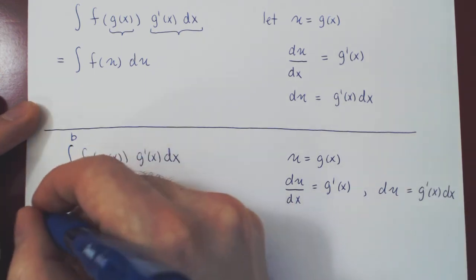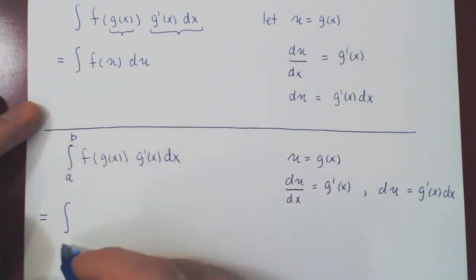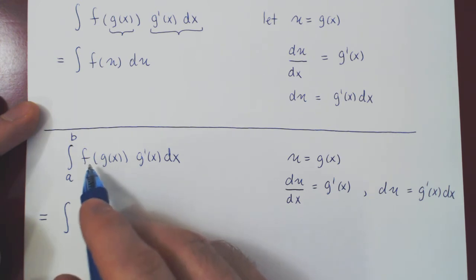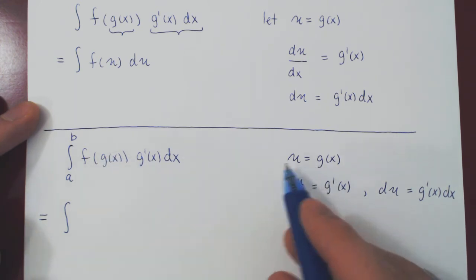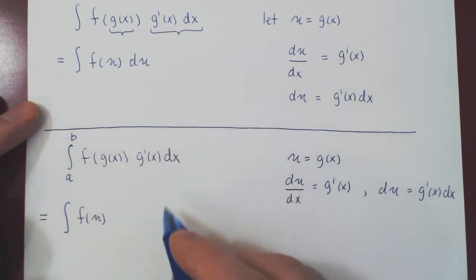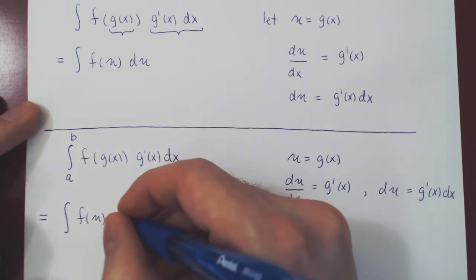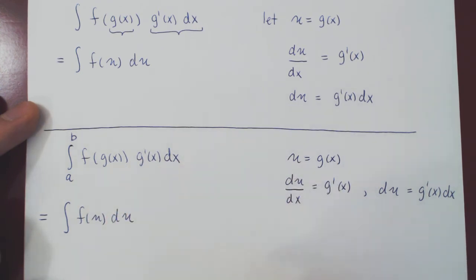So now let's start replacing. Well, the integral is the integral. We'll leave the bounds out for now. f of g of x, g of x is u, so that's f of u. And g prime of x dx, that's just du. So the f of u du stays the same.